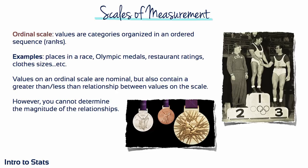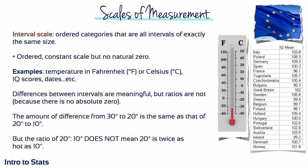An interval scale consists of ordered categories that are all intervals of exactly the same size, so equal differences between numbers on the scale reflect equal differences in magnitude. However, the zero point on an interval scale is arbitrary and does not indicate a zero amount of the variable being measured. For example, 80 degrees Fahrenheit is exactly 20 degrees higher than 60 degrees Fahrenheit, but a temperature of zero degrees Fahrenheit does not mean there is no temperature and does not prohibit the temperature from going even lower. Because of this, the ratio between two points on an interval scale is meaningless.